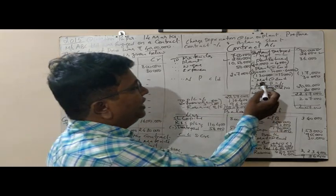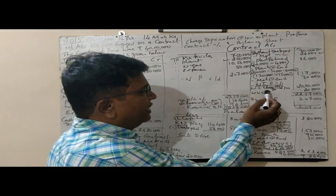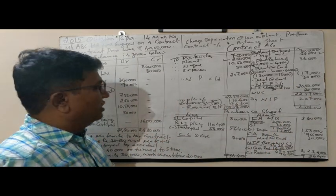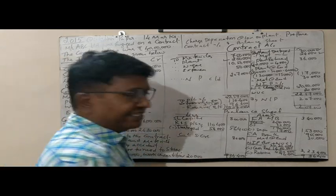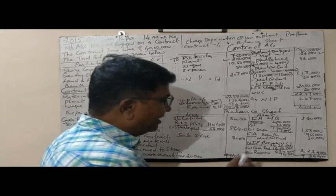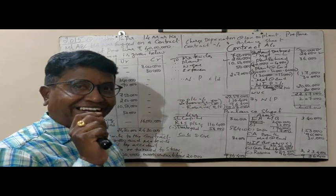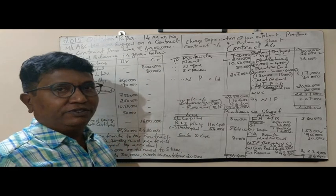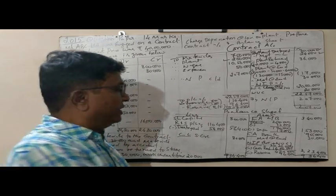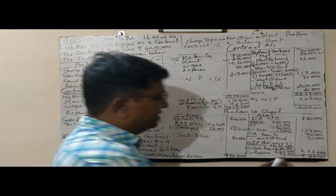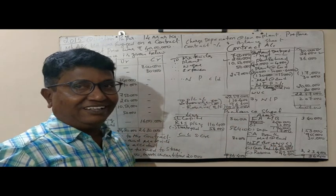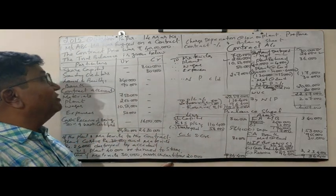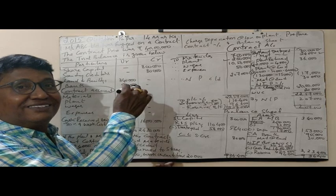One more very important point: work in progress. Work certified plus uncertified together is 20 lakh 20,000. Cash received is 16 lakhs, meaning we still need to get 4 lakh 20,000 from the contractee. From that, we kept 96,600 as reserve for the incomplete portion. The remaining 3,23,400 is the amount to be received from the contractee. This is how we solve the question whenever a trial balance is given.